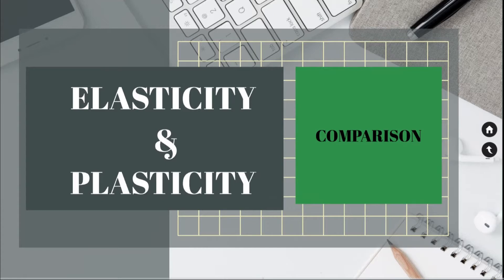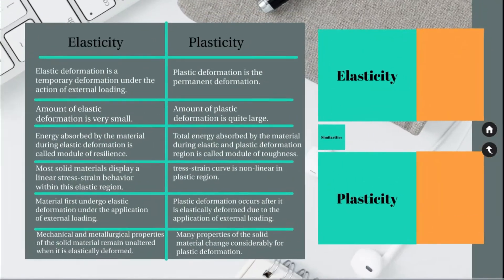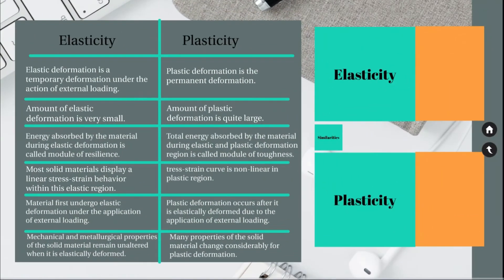Elasticity and plasticity. Both are properties of solids, and any type of loading — for example, normal, shear, or mixed loading — can result in either plastic or elastic deformation. Before doing a comparison study, let us see what elasticity and plasticity of a material are.